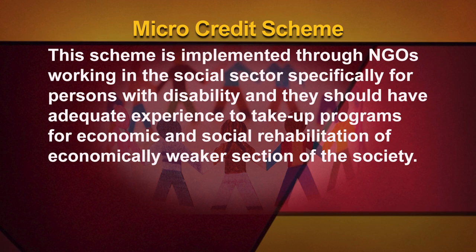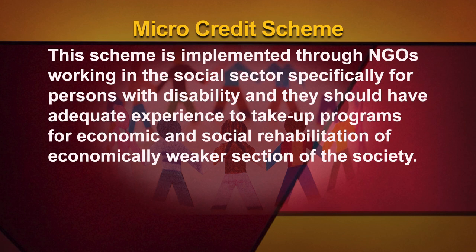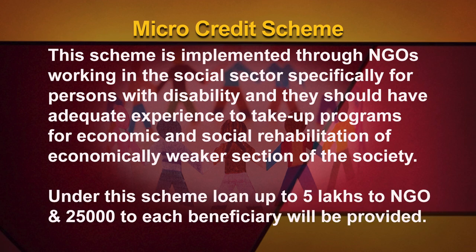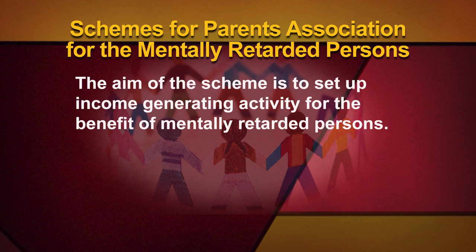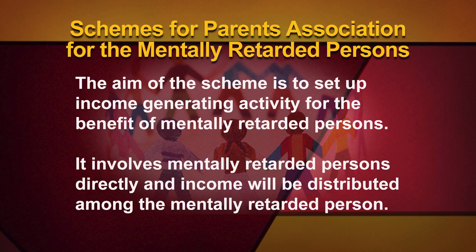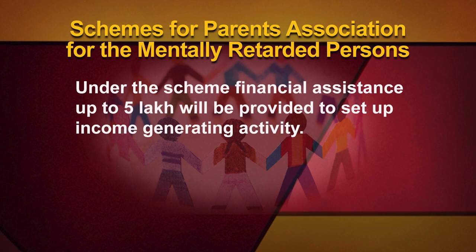Micro Credit Scheme: this scheme is implemented through NGOs working in the social sector specifically for persons with disability, and they should have adequate experience to take up programs for economic and social rehabilitation of economically weaker sections of society. Loan up to 5 lakhs to NGOs and 25,000 to each beneficiary will be provided. Schemes for Parents Association for Mentally Retarded Persons: the aim is to set up income generating activity for the benefit of mentally retarded persons, involving them directly, with financial assistance up to 5 lakhs.